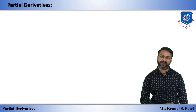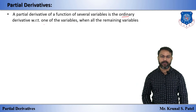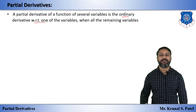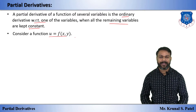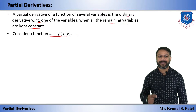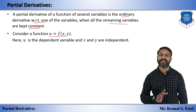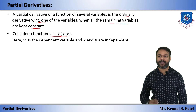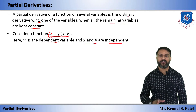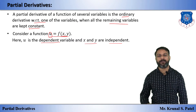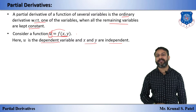A partial derivative of a function of several variables is the ordinary derivative with respect to one of the variables when all the remaining variables are kept constant. That means if you are given the function u = f(x, y) and you differentiate with respect to x, the other variable y remains constant — we treat y as a constant and differentiate only with respect to x. Here u is the dependent variable and x, y are independent variables, because the value of u depends on both x and y.